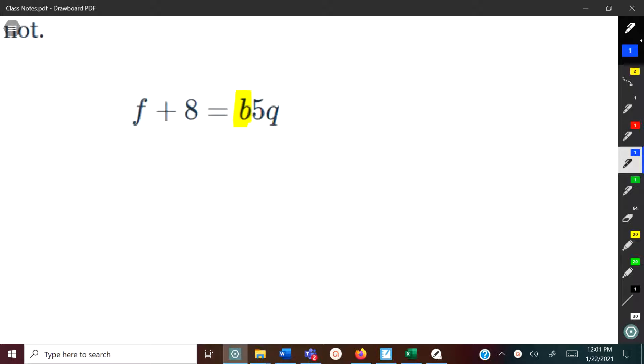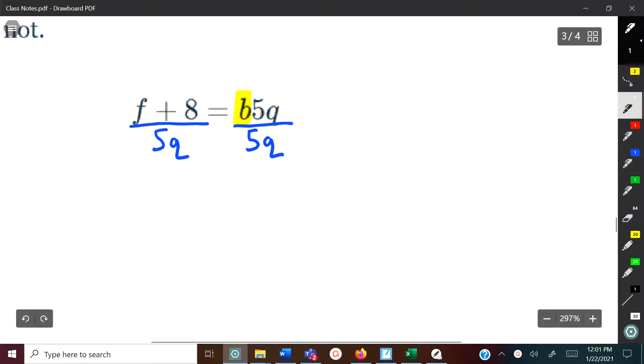Whatever you do on one side you have to do on the other, so we're going to divide this whole expression by 5q. On the right side, the fives and q's cancel out leaving just b isolated. On the left side we've got f plus 8 divided by 5q, and this would be your answer.